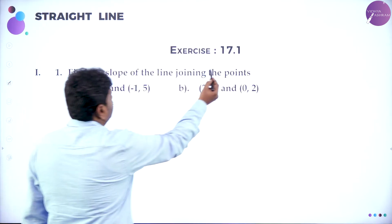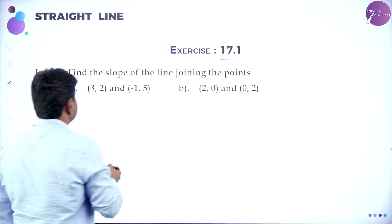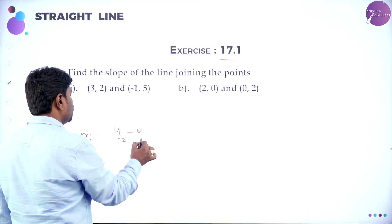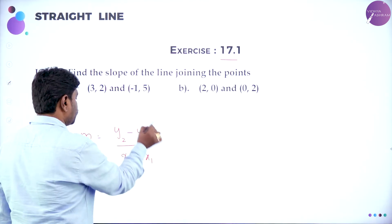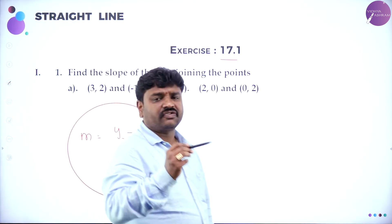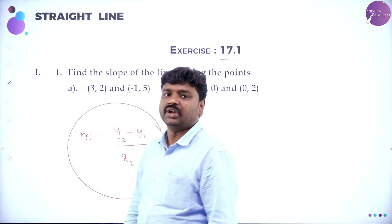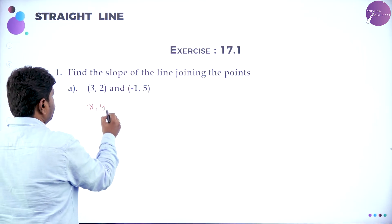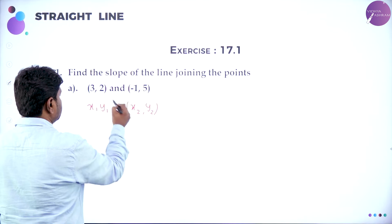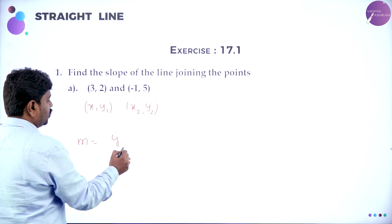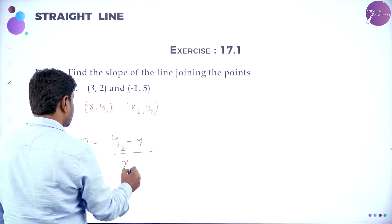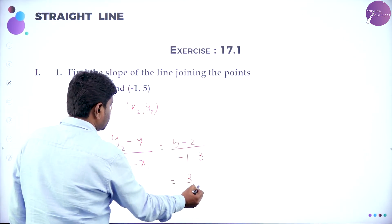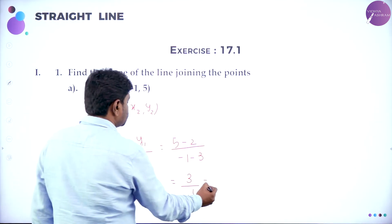Exercise 17.1: Find the slope of line joining points. When they give line joining points, use the formula Y2 minus Y1 by X2 minus X1. First problem: points (3, 2) and (−1, 5). Call the first point X1, Y1 and the second X2, Y2. Slope M is Y2 minus Y1 divided by X2 minus X1, which is 5 minus 2 divided by minus 1 minus 3. That is 3 divided by minus 4, giving slope minus 3 by 4.